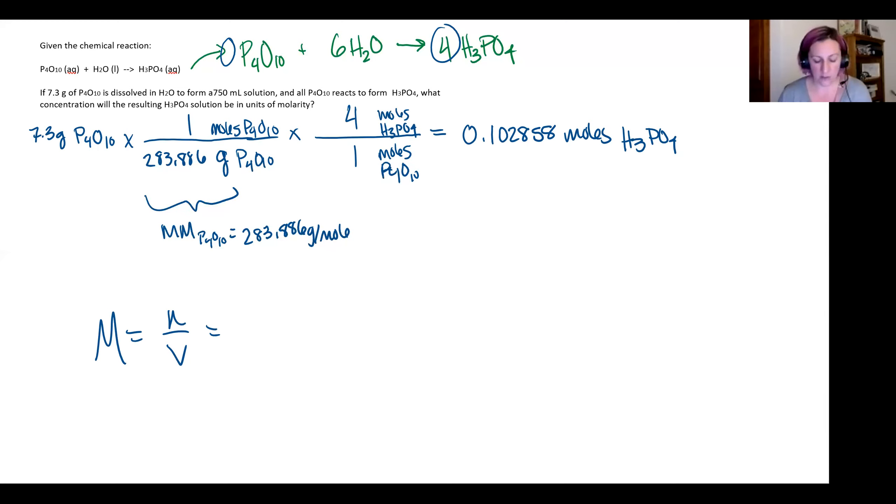So I'll plug in that value I just calculated. Looking at my problem, it tells me that I make a solution that's 750 milliliters. That'll be my volume for my solution, but I need to make sure this is in units of liters. So I have to do a metric conversion. One liter will have a thousand milliliters, so that's going to be 0.75 liters.